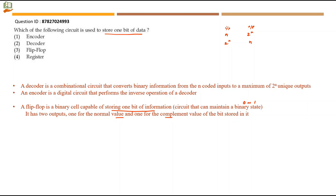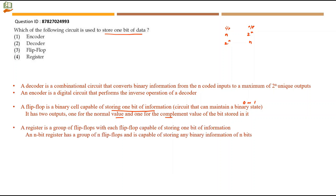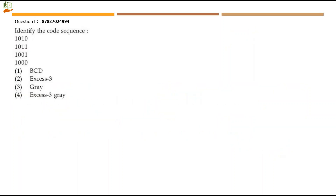A flip-flop stores only one bit of data — either a 0 or a 1. A register is a group of flip-flops, with each flip-flop storing one bit. An n-bit register has n flip-flops and can store n bits of binary information. So one flip-flop stores one bit. Option 3, flip-flop, is the right answer — a flip-flop is used to store one bit of data.